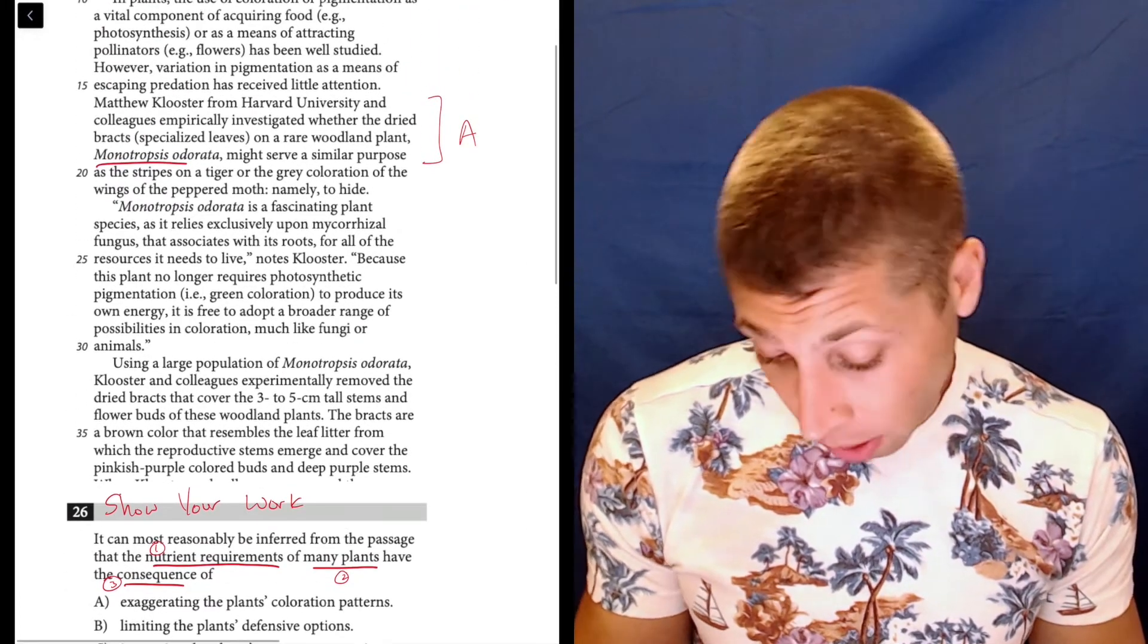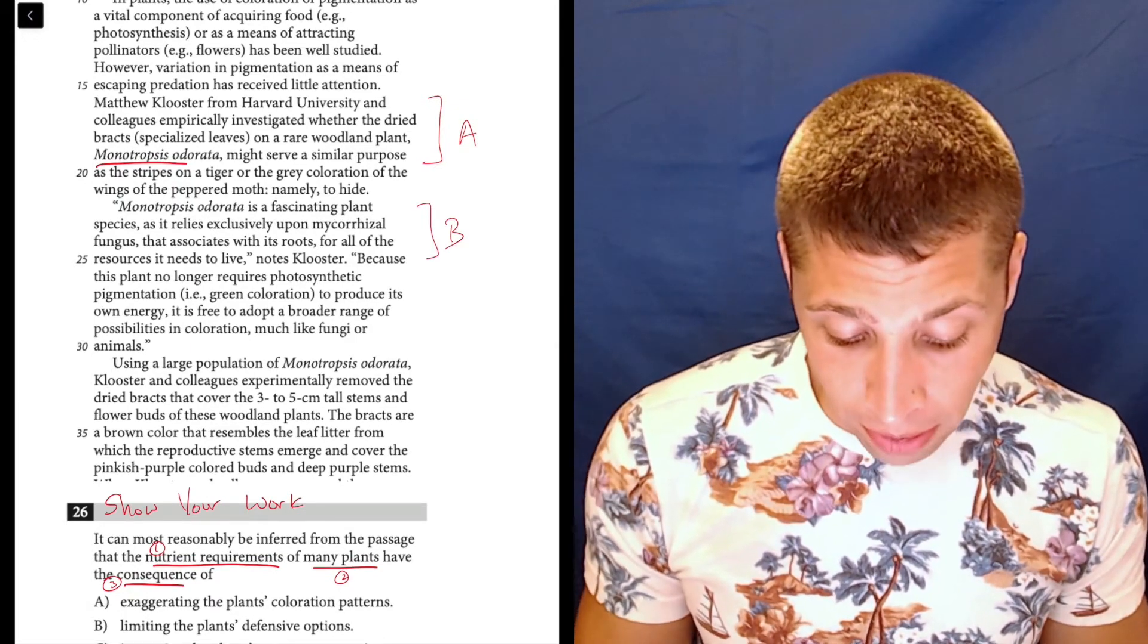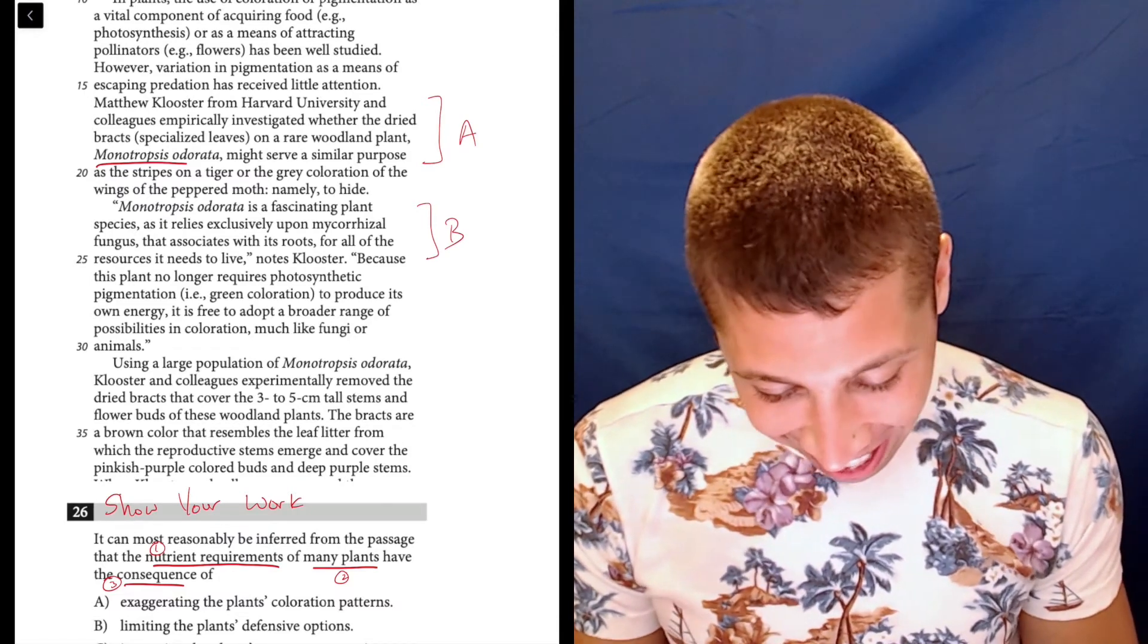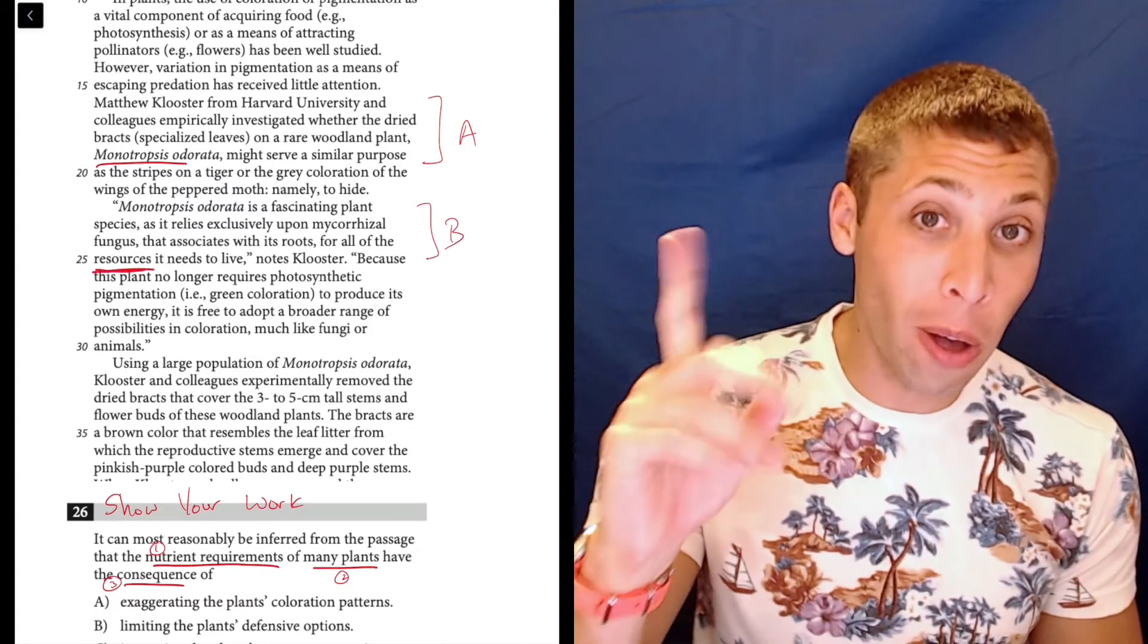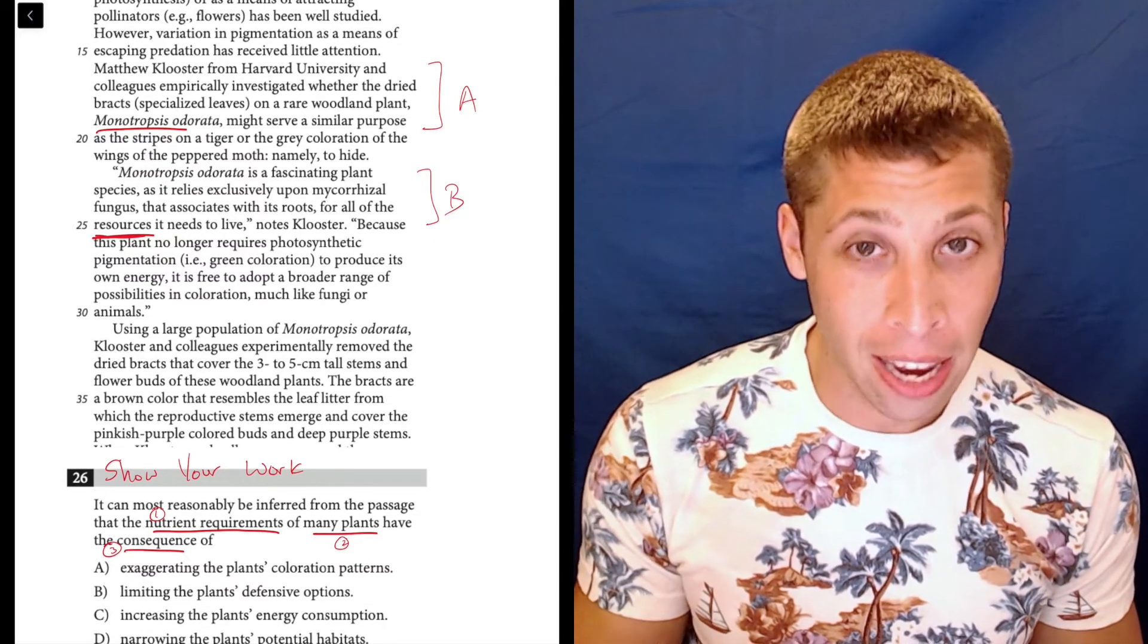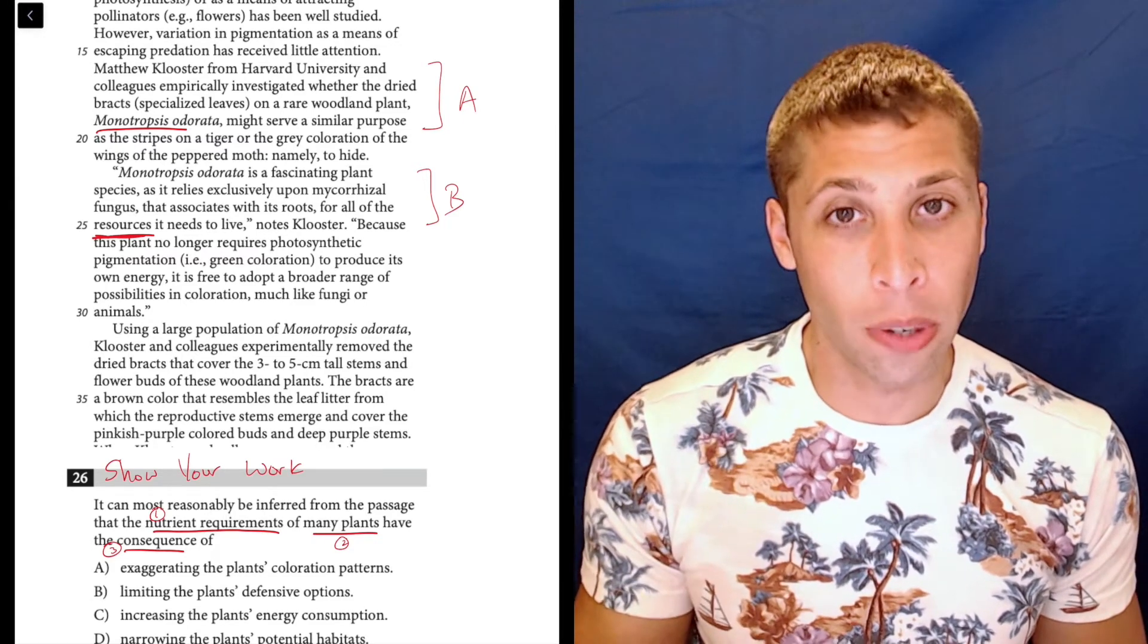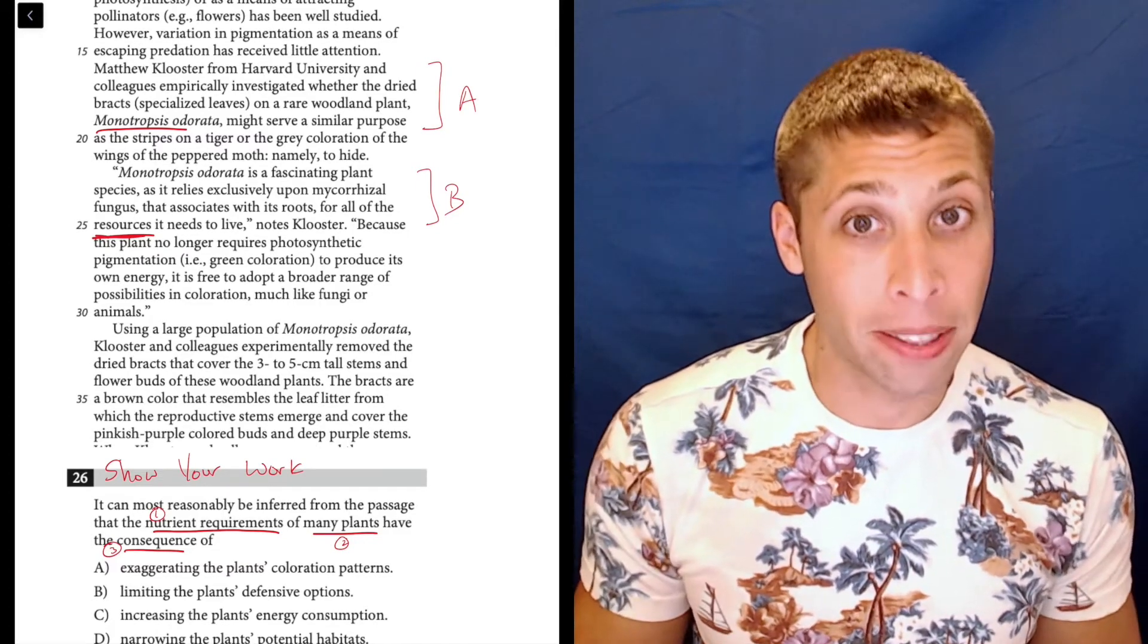Lines 22 to 25. Monotropsis odorata is a fascinating plant species as it relies exclusively on the plant upon mycorrhizal, I have no idea what these words are, of fungus that associates with its roots for all of the resources it needs to live. So that's one of the things that I wanted, right? That's the nutrient requirements, so they are talking about that. Beyond that though, I don't see the other things, but they might be there. For now, I'm not going to worry about it. I'm going to keep going. I kind of just know to keep it. That's good enough.